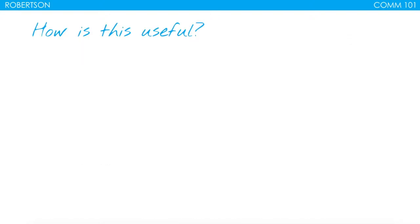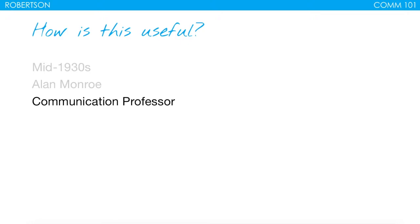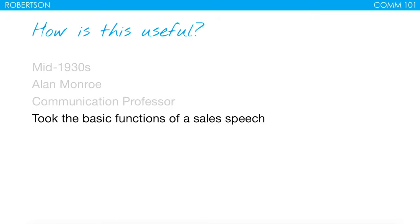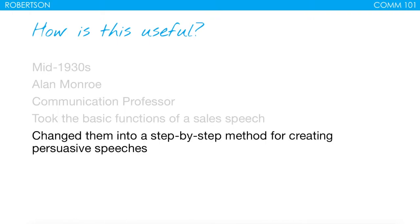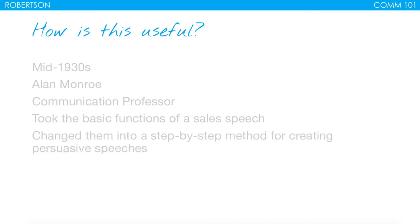So first of all, how is this useful? Monroe — his name was Alan Monroe — in the mid-1930s was a communication professor. He took the basic functions of a sales speech, because in the 1930s when people were talking about persuasion, especially in the United States, a lot of what was discussed was specifically sales. He changed those basic functions into a step-by-step method for creating persuasive speeches.